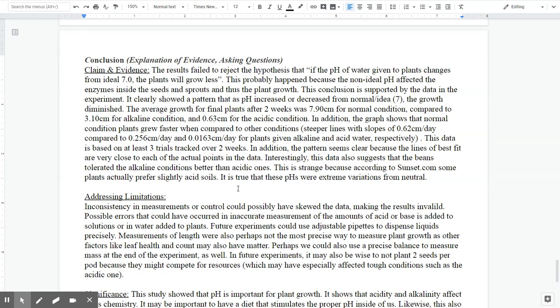This conclusion is supported by the data in my experiment. It clearly shows a pattern that as the pH is increased or decreased from the normal ideal of 7, the growth is diminished. The average growth for the final plants, and then I mentioned the actual numbers. Here's me referencing actual math, number one averages.